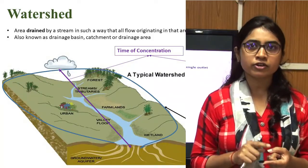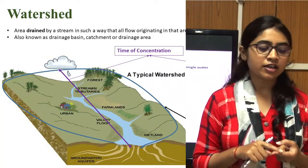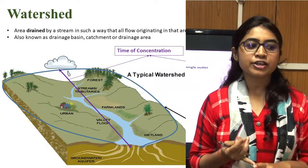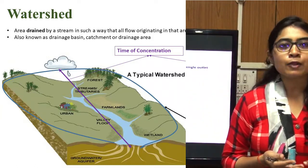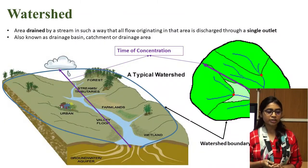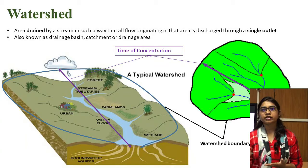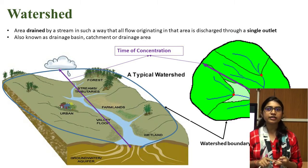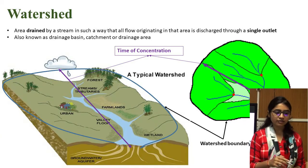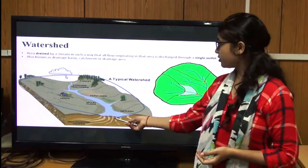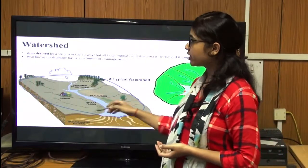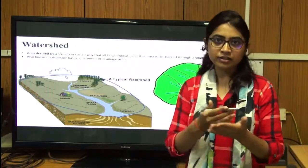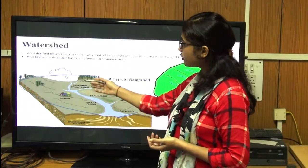These terms are synonyms of watershed but can be differentiated by area. Drainage basin is larger in area compared to catchment and watershed, whereas watershed is the smallest. A typical watershed has three main components: outlet, boundary, and stream line. The boundary is a ridge line which separates one watershed from another, and the stream line is the path along which water conveys from different areas of the watershed to the outlet.